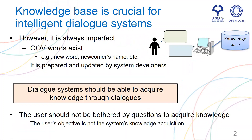Knowledge base is crucial for intelligent dialogue systems. However, it is always imperfect and out-of-vocabulary words exist — for example, new words, newcomer's names, and so on. Currently, it is prepared and updated by system developers. So we think that dialogue systems should be able to acquire knowledge through dialogue. But the user should not be bothered by questions to acquire knowledge, because the user's objective is not system knowledge acquisition.